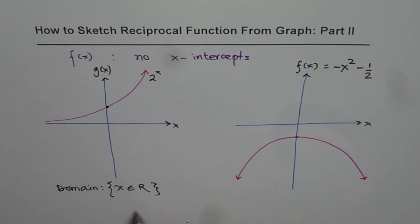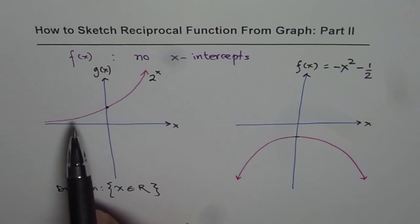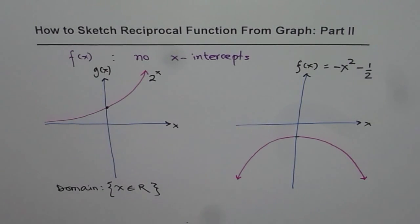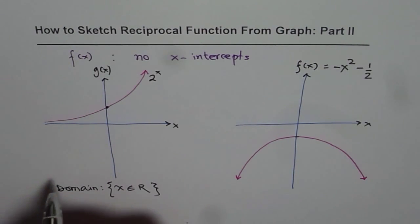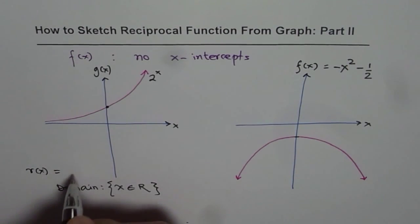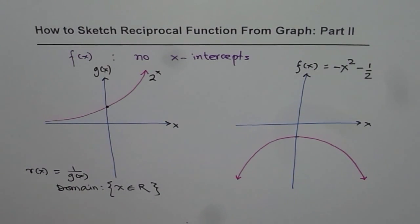Some students think that for a reciprocal function there is always a restriction on domain since they expect a vertical asymptote. But in these examples there are no vertical asymptotes — that is very important. The domain is all real numbers for both the function and its reciprocal. So the reciprocal function r of x, which equals 1 over g of x, will not have any restrictions on domain, just as the original function in this case.